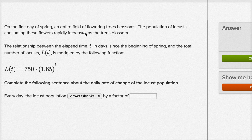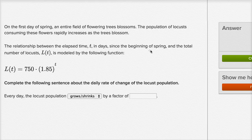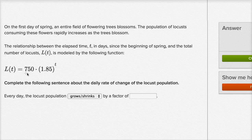So the first day of spring, an entire field of flowering trees blossoms. The population of locusts consuming these flowers rapidly increases as the trees blossom. The relationship between the elapsed time t in days since the beginning of spring, and the total number of locusts L of t, is modeled by the following function: L of t equals 750 times 1.85 to the t-th power. Complete the following sentence about the daily rate of change of the locust population.